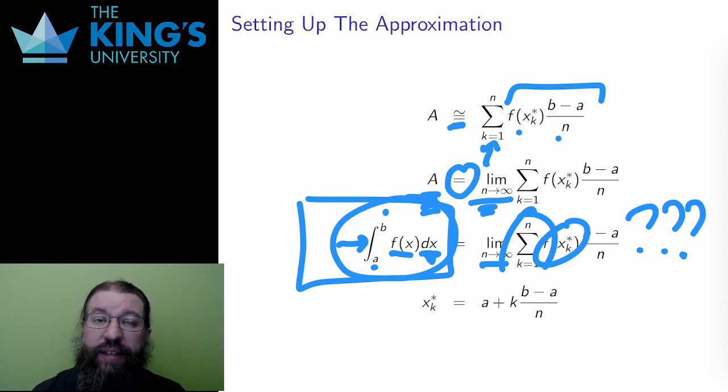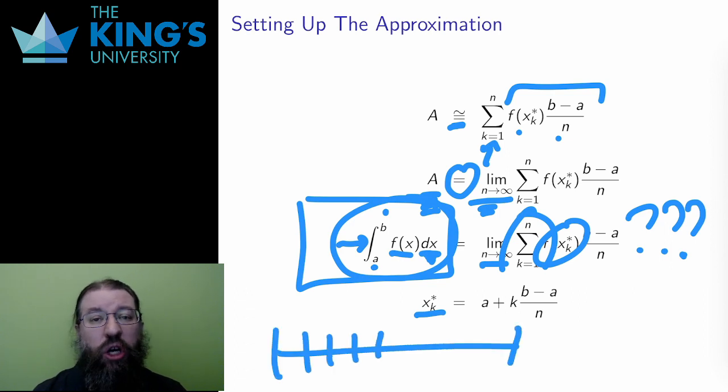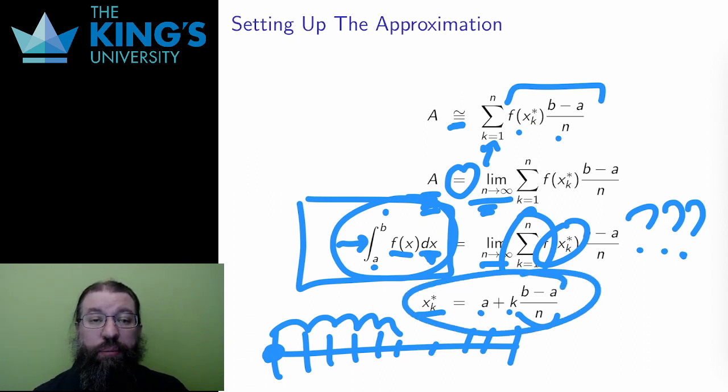One thing I need to try to do a calculation is a way to write this random point xk star. It can be any point in the kth piece of the interval. To get there, what I can do is I can start at a, the left point of the full interval, and then I can add the width of the small rectangle k times. This is a plus k times b minus a over n, since b minus a over n is the width of each small rectangle. I'll use this expression for xk star in my example.